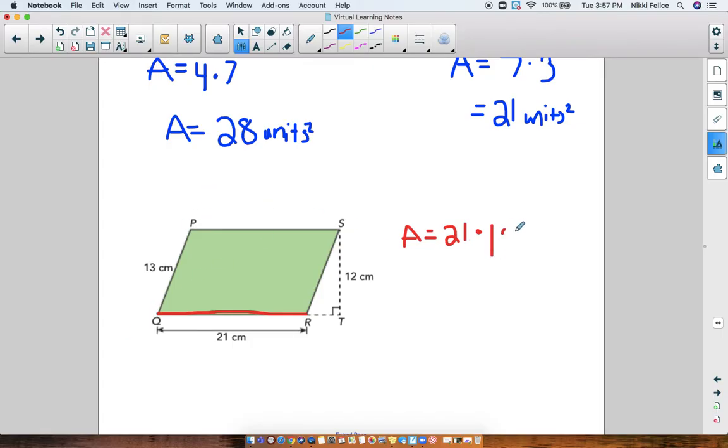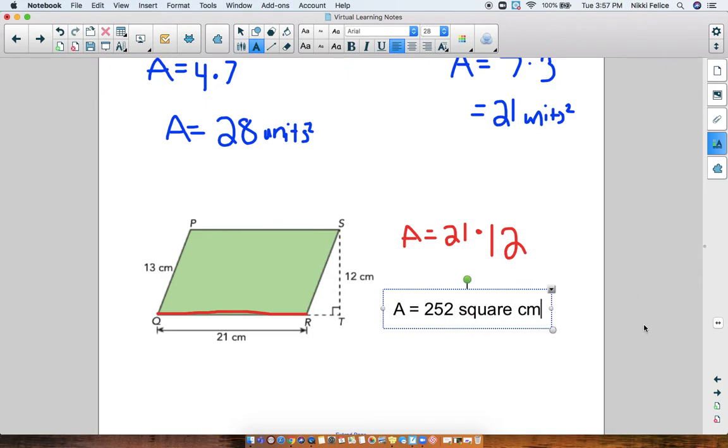We're doing 21 times 12 here. I'm going to switch over to typing. So in this problem, we do 21 times 12. And we get that the area is 252 square centimeters. And that's it.